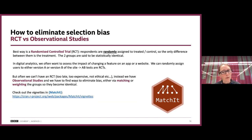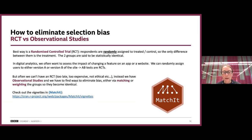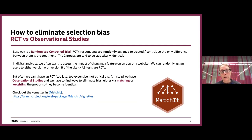Unfortunately, very often we don't have access to an RCT — either because it's too late and we get the data after the event, it's too expensive, not practical, or not ethical. For example, if you're trying to understand the effect of smoking on lung cancer, you can't randomly assign people to smoking or not smoking. Instead, you have to work with observational studies and find ways of eliminating that bias — either through matching or through weighting.